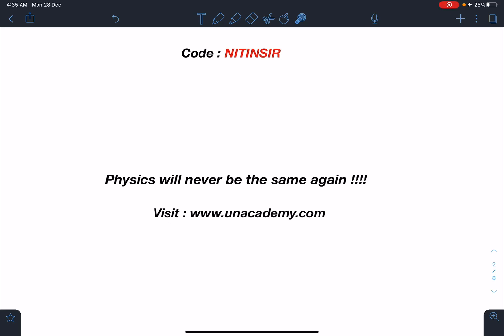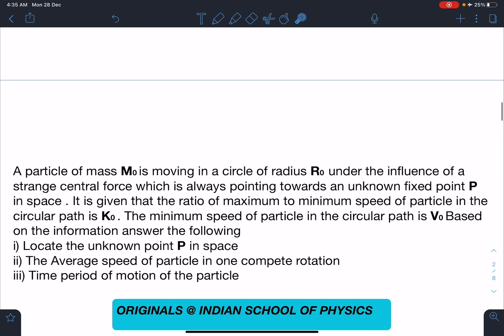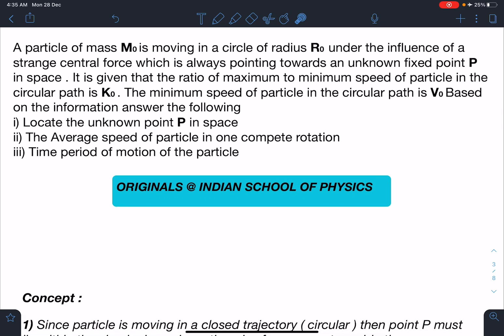Here is the statement of this problem: A particle of mass m₀ is moving in a circle of radius r₀ under the influence of a strange central force which is always pointing towards an unknown fixed point P in space. It is given that the ratio of maximum to minimum speed of particle in the circular path is k₀. The minimum speed of particle in the circular path is v₀. Based on this information answer the following: Number one, locate the unknown point P in space. Number two, the average speed of particle in one complete rotation. Number three, time period of motion of the particle.